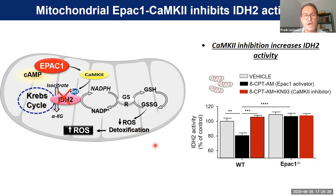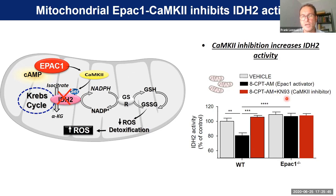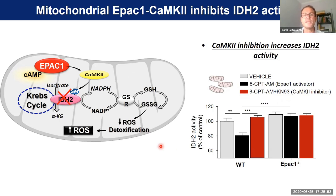The EPAC-1/CaMKinase 2 axis is also involved in the regulation of IDH2: activating EPAC-1 with HCPT in the presence of a CaMKinase 2 inhibitor fails to decrease IDH2 activation. So this EPAC-1/CaMKinase 2 axis inside the mitochondria is able to inhibit IDH2.